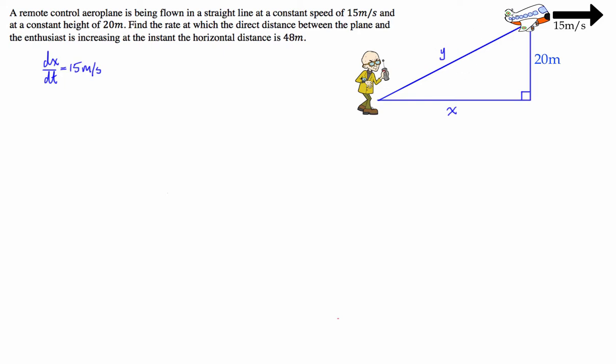And using this diagram here, what we can do is quite easily, using the Pythagorean theorem, come up with a relationship between Y and X. So, I can say that Y is going to be equal to the square root of 20 squared, which is 400, plus X squared. So what we've been asked to find in this particular problem is the rate of change of Y with respect to time. So, what we're looking for is dy/dt.